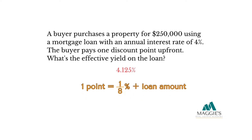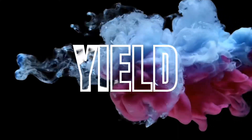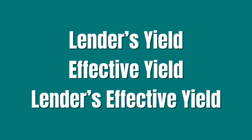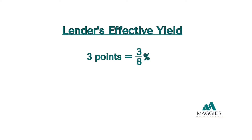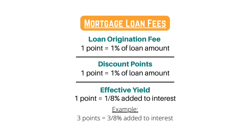Keep in mind each point charged up front usually bumps the interest rate by around 1/8%. When you see the keyword 'yield' — it may pop up on your exam as lender's yield, effective yield, or lender's effective yield — the keyword is yield. When they're asking for the yield, all you have to do is take the total number of points, put it over 8, then add it to the interest rate. One point bumps up interest by 1/8%, so if you're given three points, it will be 3/8% plus the interest.